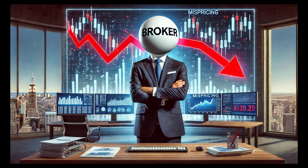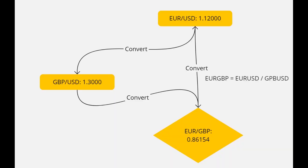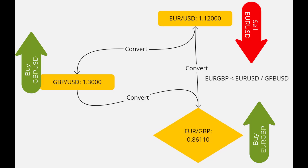Let's look at a very easy to understand example — an arbitrage triangle in forex. Here, three different assets can be seen. These three are highly correlated with each other in a way that one of them should be equal to the second one divided by the third. However, if the EURGBP is not equal to the EURUSD divided by the GBPUSD, we can bet that it will correct in the future, which is why it is a 100% winning strategy.